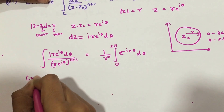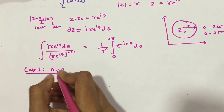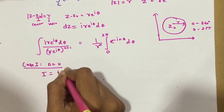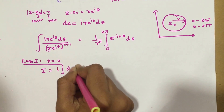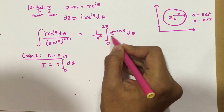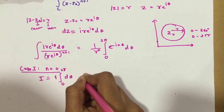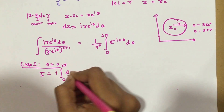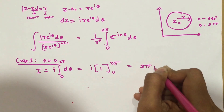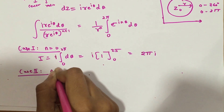I have two cases. Case 1: when n = 0. When I put n = 0, my integral becomes i·∫₀²π dθ, because e^(0) = 1. So ∫₀²π dθ = 2π, and i times 2π gives me 2πi.